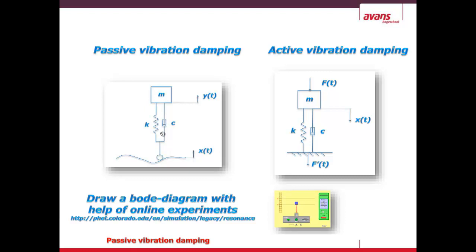This is called passive because the environment puts this vibration on the mass. Whereas in active vibration damping, a machine with a mass M actually vibrates itself — it causes the vibration and then causes a certain force on the outside world via a spring and a damper.